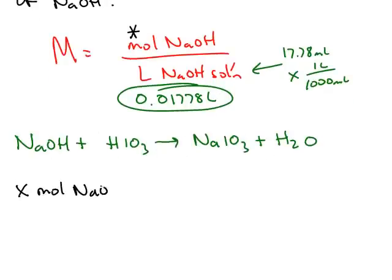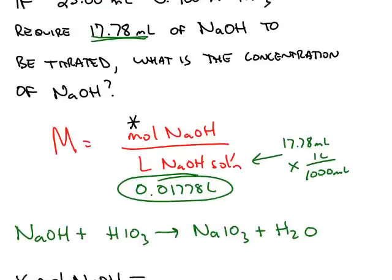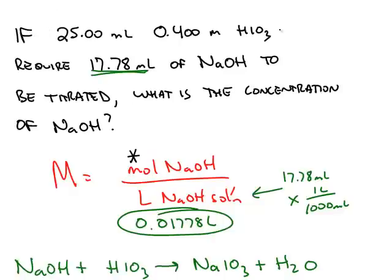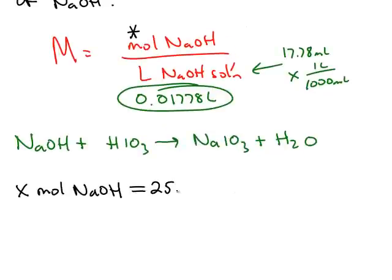How many moles of sodium hydroxide? We're going to set that equal to the other chemical, the iotic acid. We know we have 25 milliliters and we know its conversion factor. So we're going to set this equal to the 25 milliliters of the iotic acid and use the conversion factor.